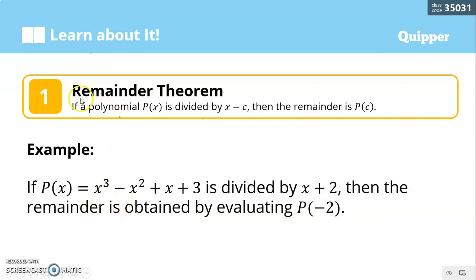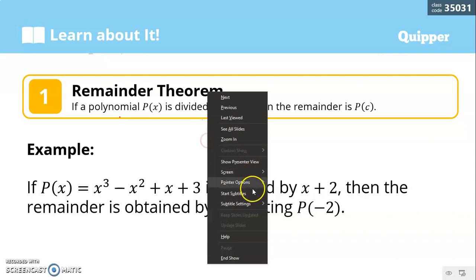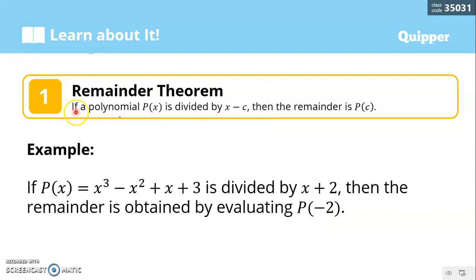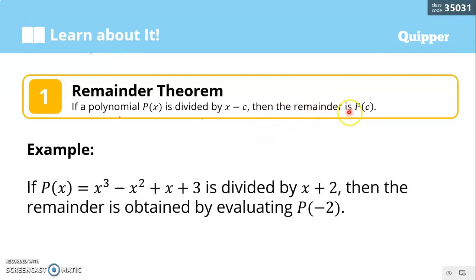In this video we are going to talk about the Remainder Theorem. The Remainder Theorem states that if a polynomial P of X is divided by X minus C, then the remainder is P of C. P of X is our dividend and the divisor is X minus C. Some books use X minus K — they are the same thing. So X minus C or X minus K, and if the divisor is X minus K then the remainder is P of K.